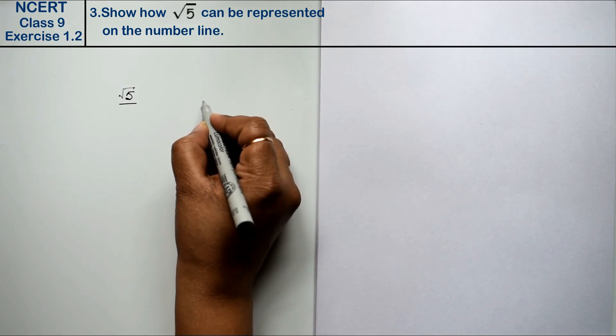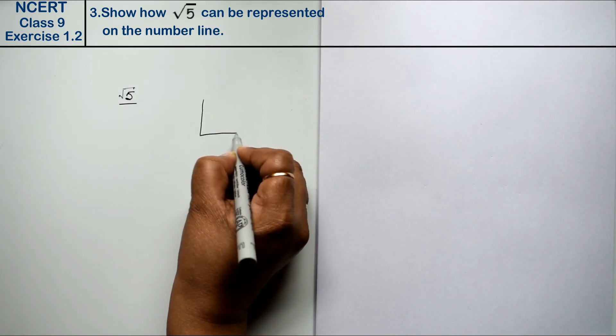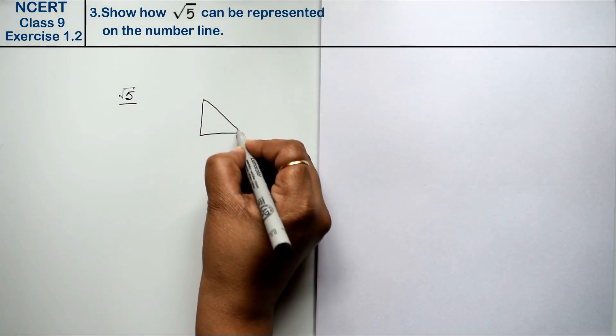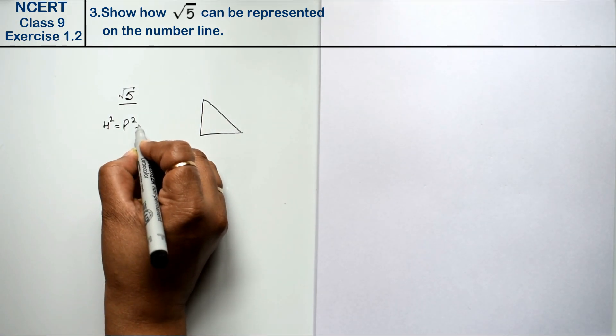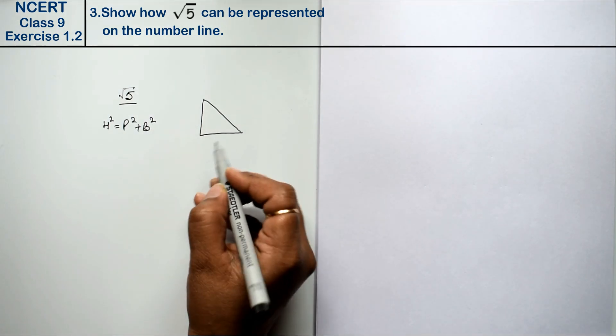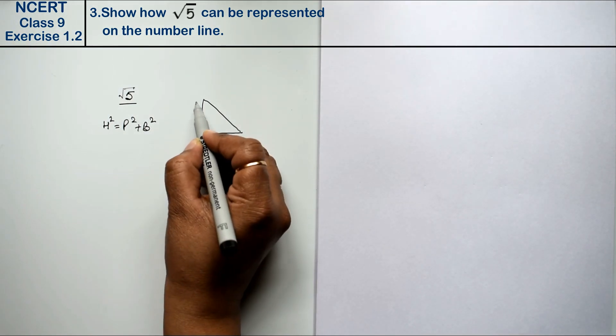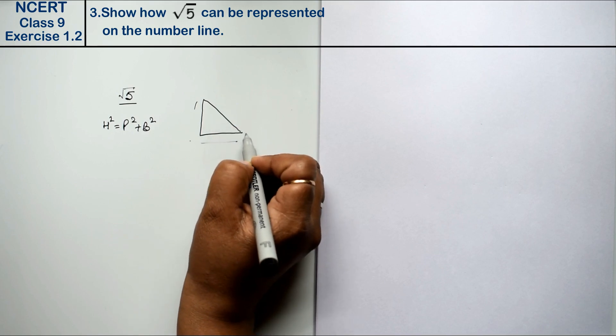So before we represent root 5, we should know about the Pythagoras theorem. What was the Pythagoras theorem? This was our base, this was our perpendicular, and this was our hypotenuse.